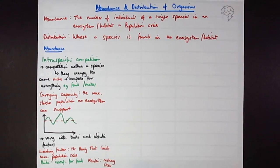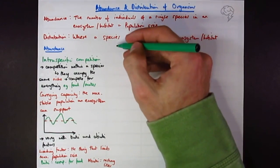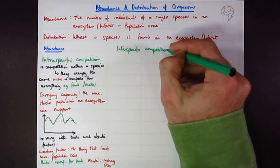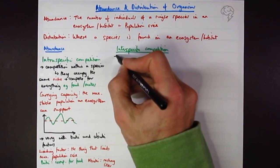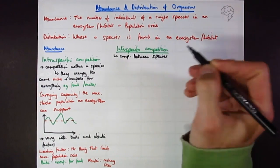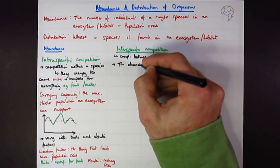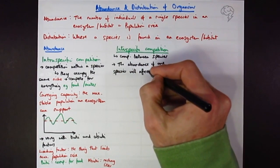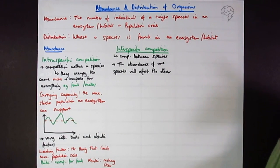That's intraspecific competition within a species. Let's look at interspecific competition. I'm going to be quite tight on space. Competition between species is obviously going to affect the abundance and distribution of other things. We could say the abundance of one species will affect the other.